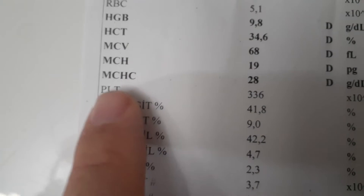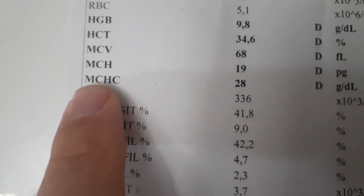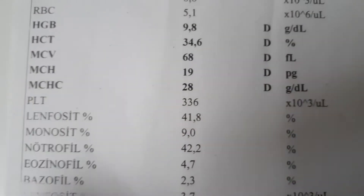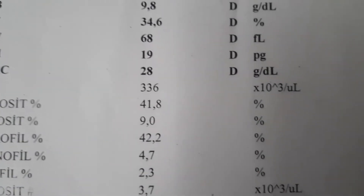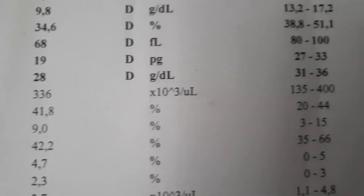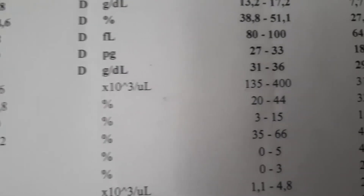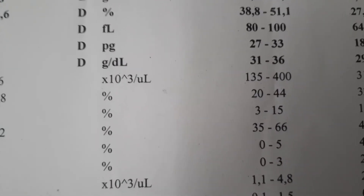MCHC gives roughly the weight of hemoglobin in a given amount of erythrocytes. High MCHC is seen in hereditary spherocytosis, sickle cell anemia, or hemoglobin C disease — similar to MCH. Low MCHC levels indicate anemia, especially in iron deficiency anemia, anemia due to chronic diseases, thalassemia, and lead poisoning.